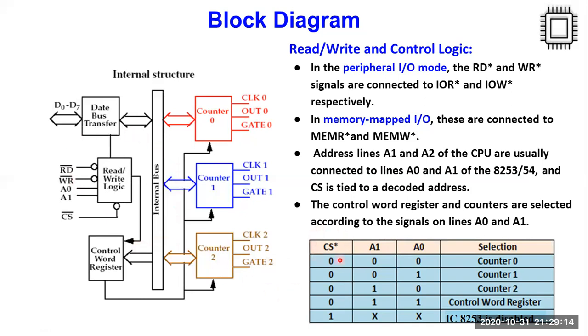Remember chip select signal being an active low signal. If this signal turns out to be one, it indicates your IC is logically disabled on the system. But suppose if chip select signal is turning out to be active low, then we look into what is the status of A0 and A1 lines. On a combination of A0 and A1 lines, we decide whether counter 0 is enabled, counter 1 is enabled, counter 2 is enabled, or maybe are we writing inside the control word register.